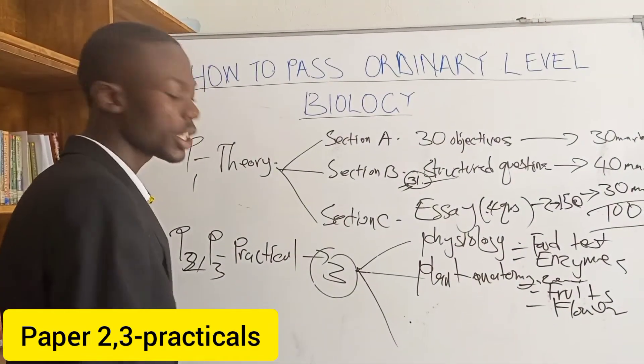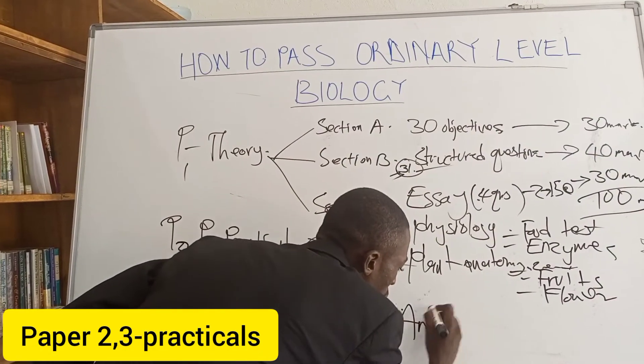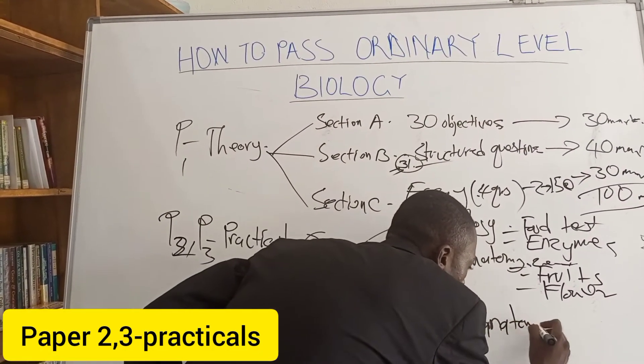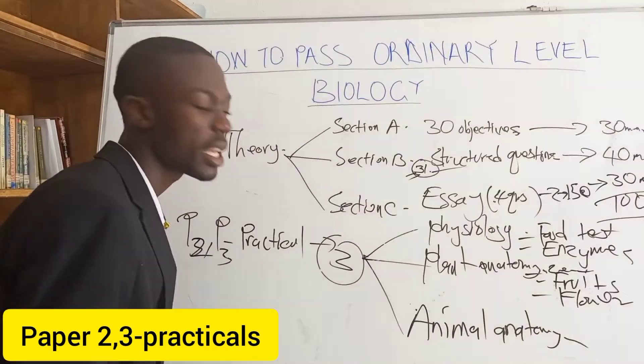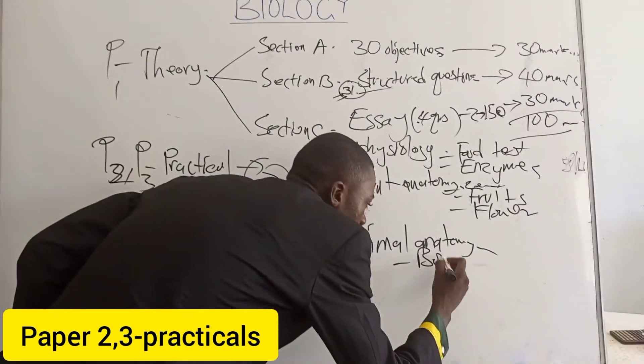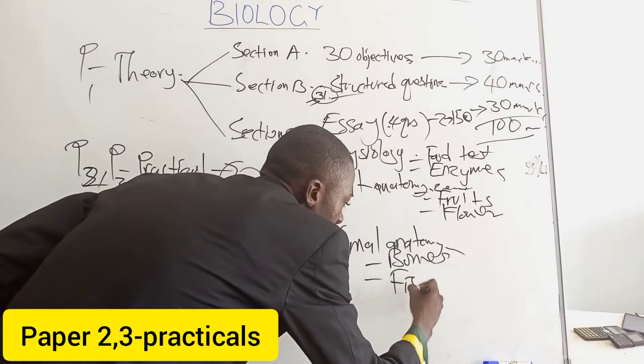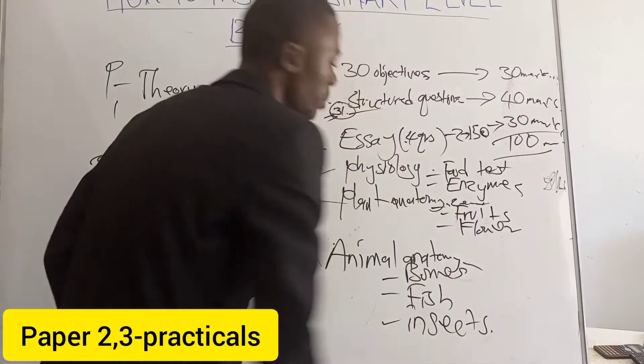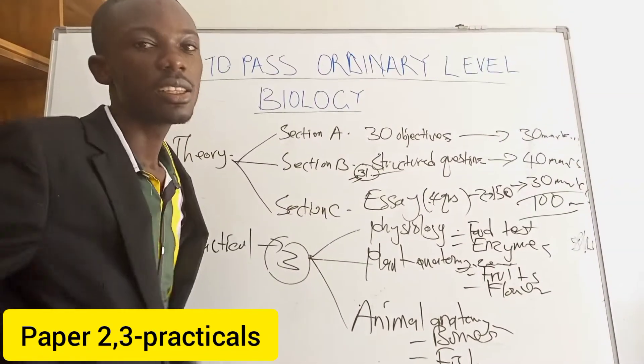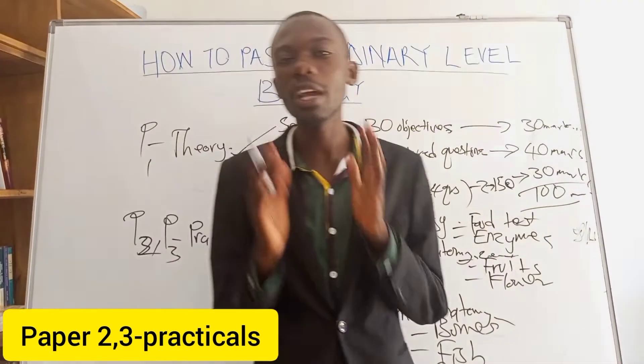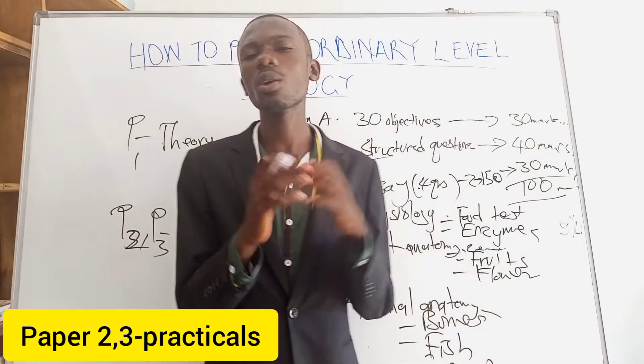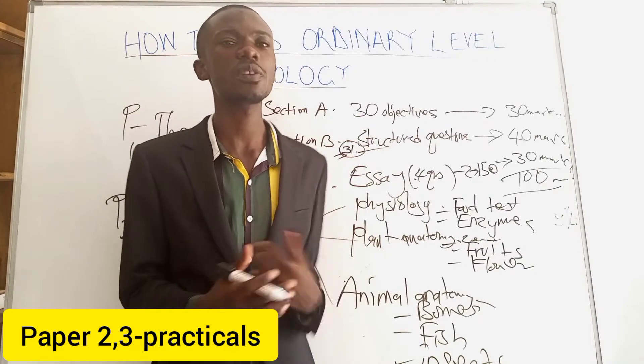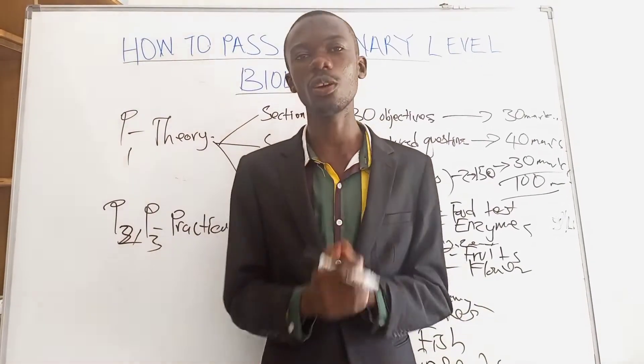Then, the last section they bring is actually animal anatomy. You need to know animals very well. Like, animal anatomy. Now, under animal anatomy, some of the things they bring is things like bones, bones, of course, they bring like fish, they bring like insects, and very many others, and very many things they do set under this section. So, that was the breakdown of all-level biology papers, and I think with this, you can go and do your research, read, and expound on these different topics so that you can succeed in all-level biology.